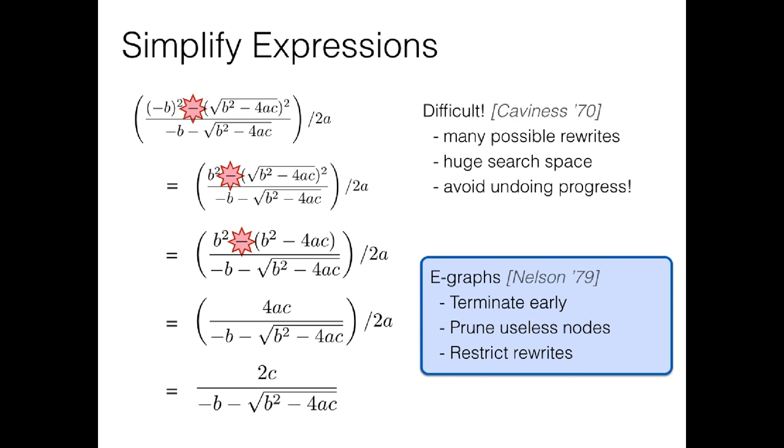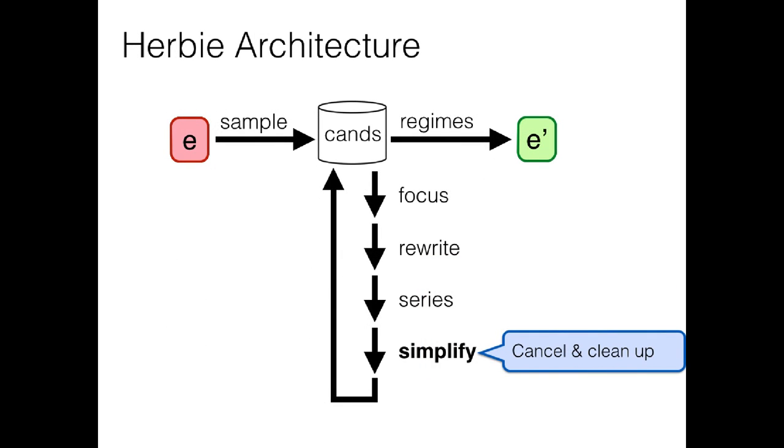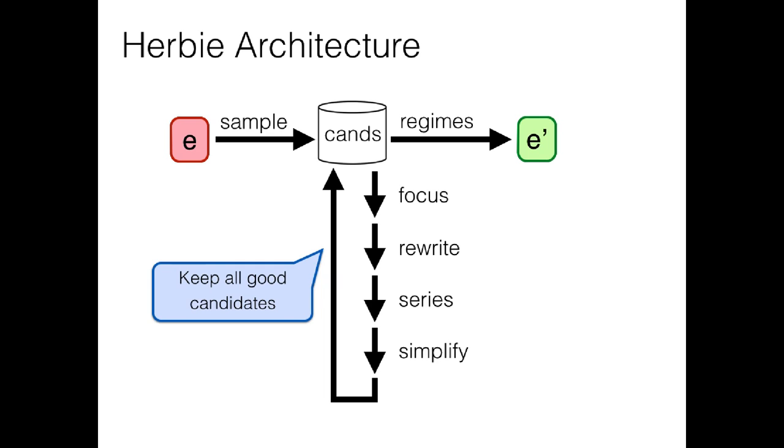So these are the steps by which we're generating new candidate programs. And again at each point through this loop we're going to generate a bunch of candidates, and then keep the ones that improve our accuracy. And at the end of this loop we're going to have a lot of candidates that improve our accuracy on different inputs. We're going to want to combine those candidates into a single expression that improves accuracy globally. And we do that with our regime inference pass.